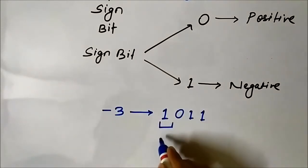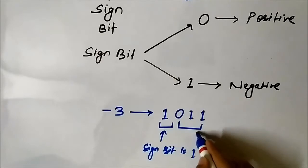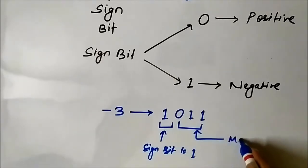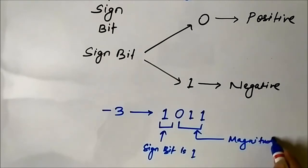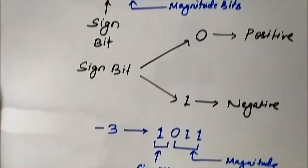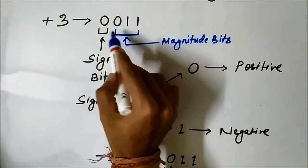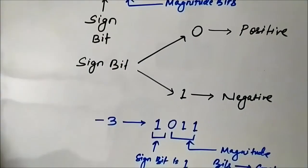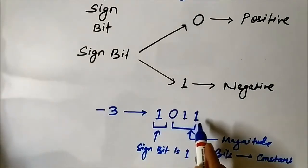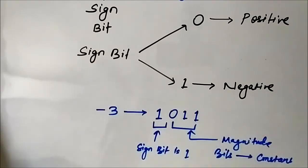Here the sign bit is 1, meaning the number is negative, and the magnitude bits remain as they are — 0, 1, 1. So plus 3 is 0011 where the sign bit is 0, and minus 3 is 1011 where the sign bit is 1. The magnitude bits are constant at 011. Only the sign bit changes.